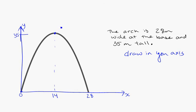So now I've got three points here. I have 14, 35. I have 0, 0. And I have 28, 0. So I have three points. I'm away, and I can go with it.